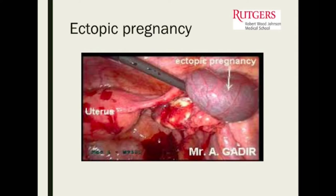This is what an ectopic pregnancy looks like on laparoscopy. That's the uterus; this is the ectopic pregnancy in the fallopian tube. This is where the pregnancy implanted and it's starting to bleed. When we go in, if it's already ruptured, we often have to remove a part of that tube — a partial salpingectomy. Our ideal treatment is laparoscopic if we're able to get adequate access and visualization.